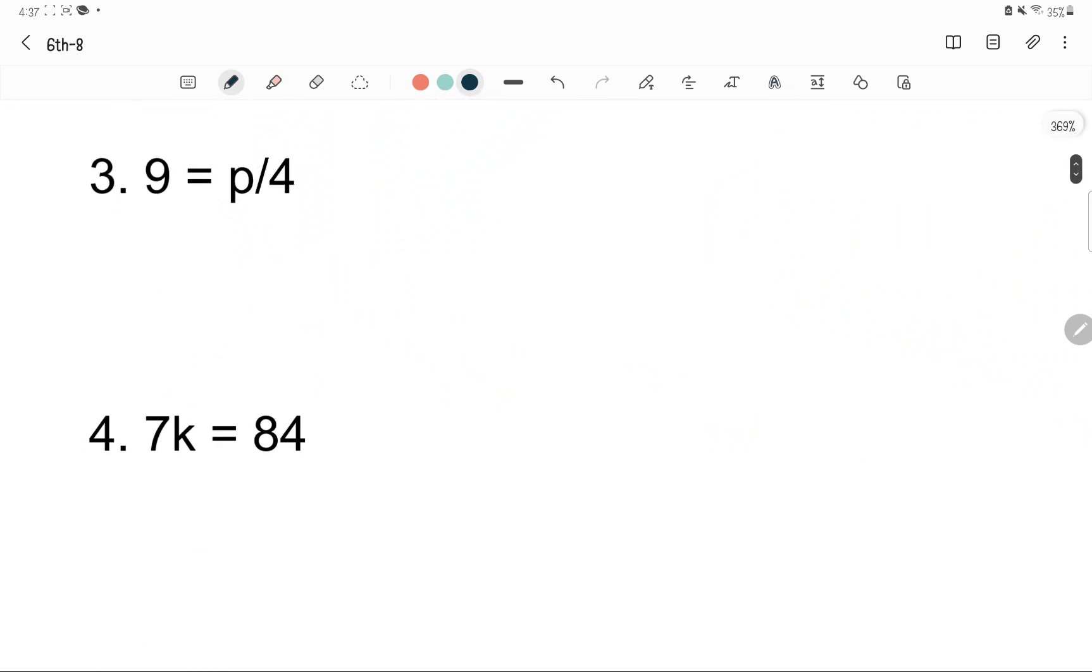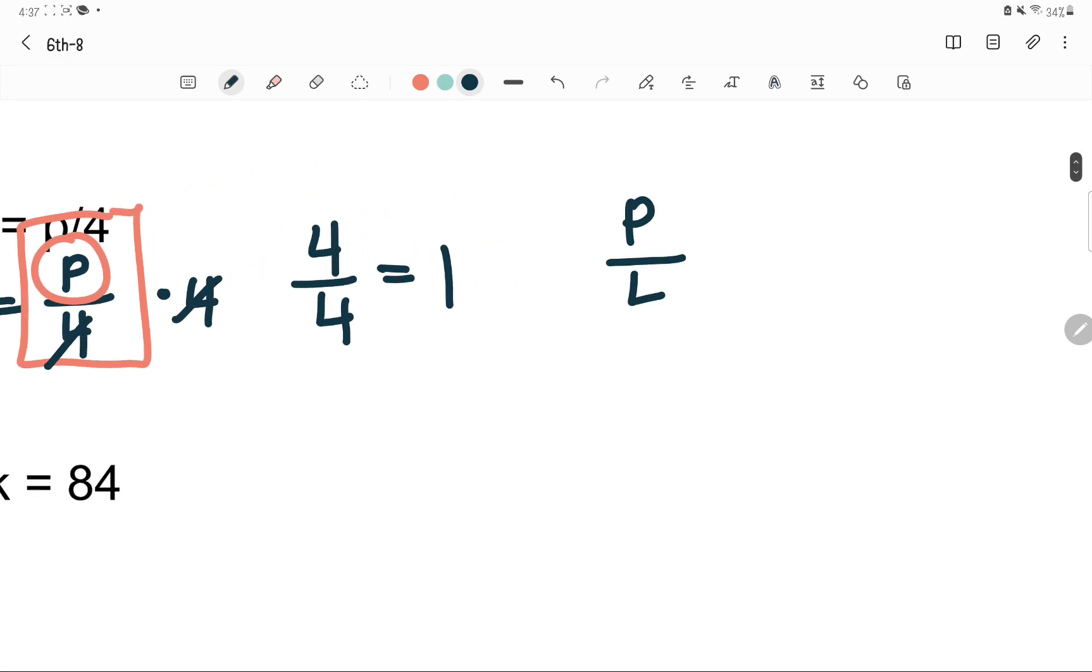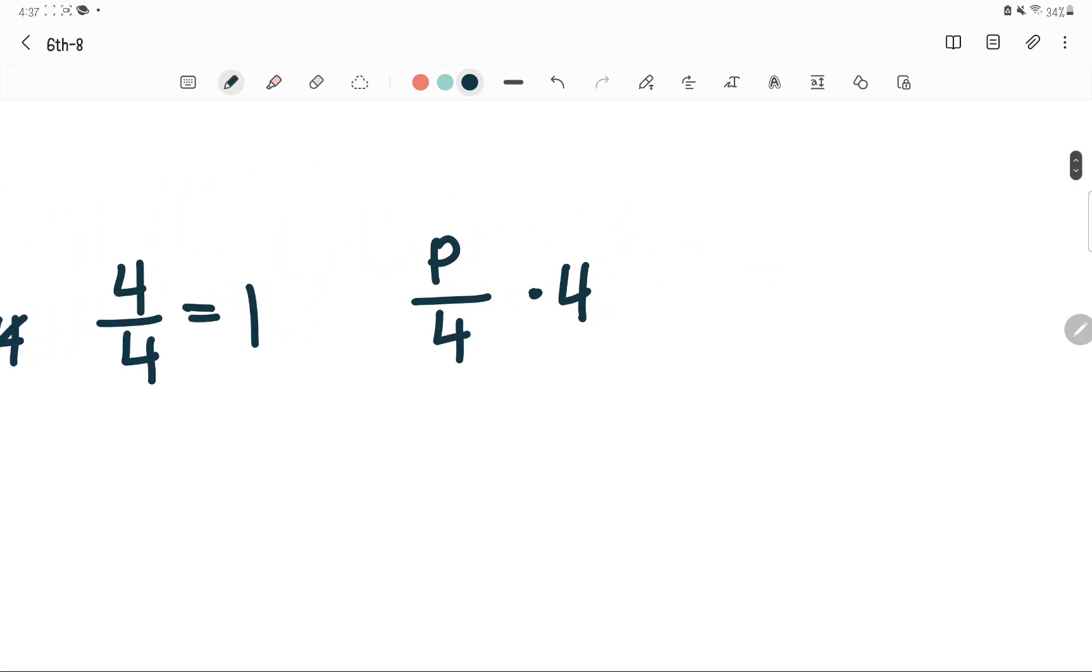For number 3, it's 9 equals p over 4. You have to get the p by itself on one side of the equation. In this case, it's the right side. What you have to do is multiply by 4, because 4 over 4 is just 1. The way that I write is 4 times 4 is 4p over 4, which is 4 times p over 4, and it cancels out.